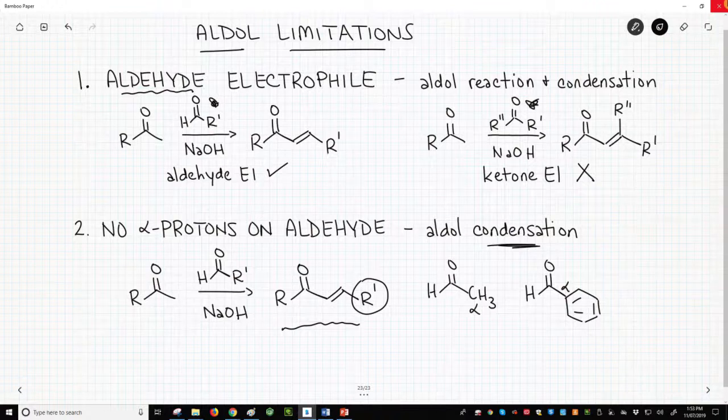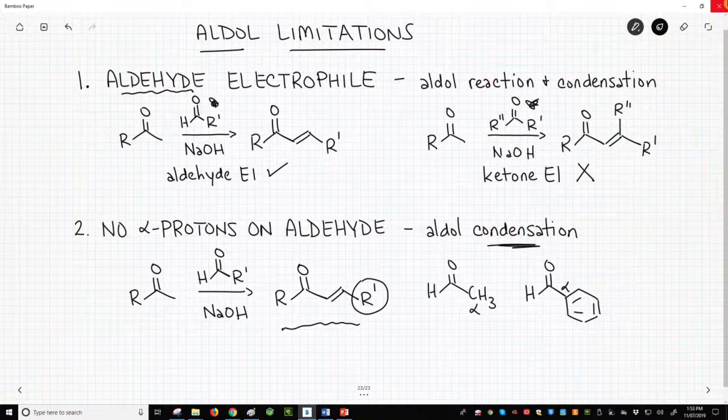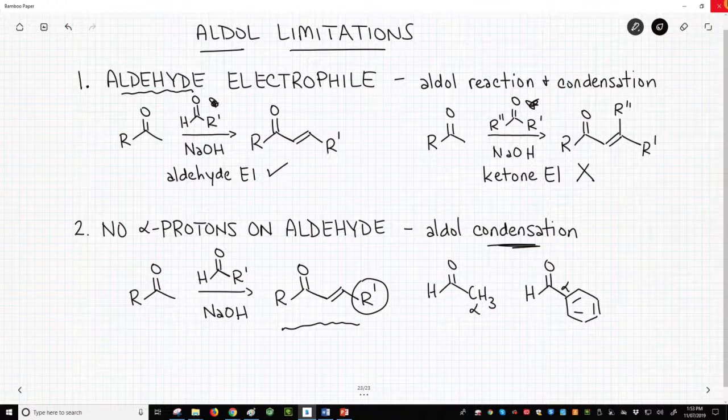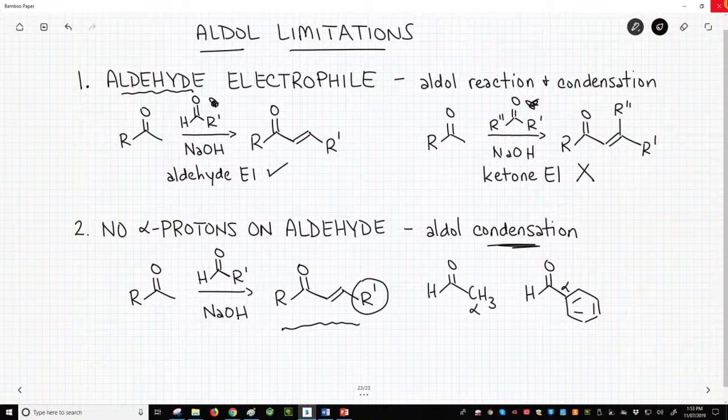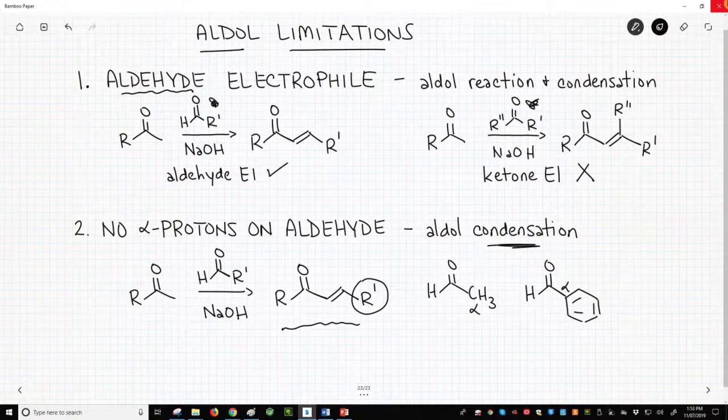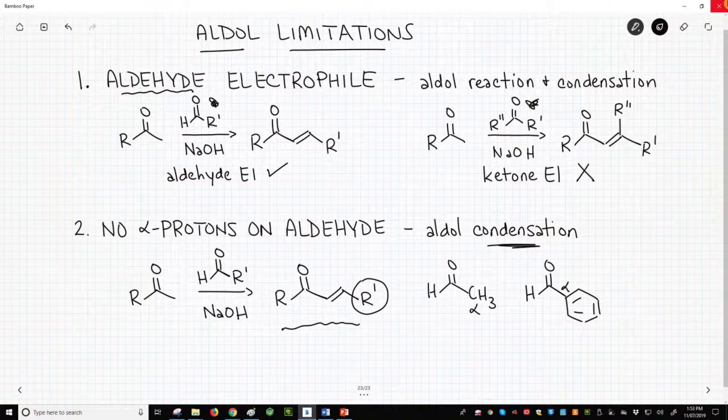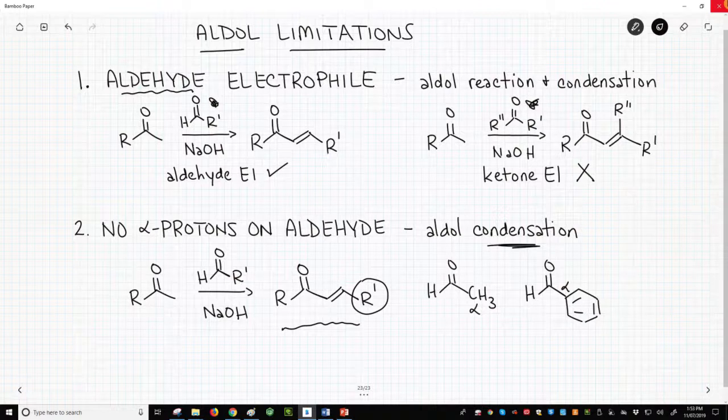Remember, in the aldol condensation, we just dump everything together – ketone, aldehyde, and base. The base doesn't know to only make an enolate from the ketone. It could also make an enolate from the aldehyde. If the aldehyde can form an enolate, if it has alpha protons, then you potentially have two different enolates – two different nucleophiles in the reaction. Multiple nucleophiles means a mixture of products. Bad news.